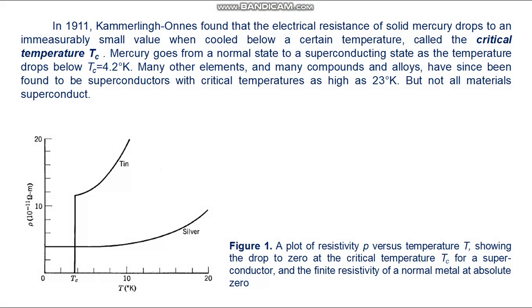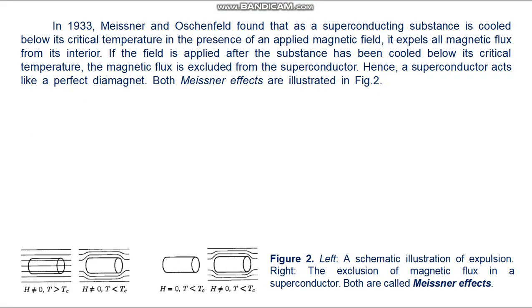Figure 1 shows the resistivity at very low temperatures for a superconductor (tin) and a non-superconductor (silver). In a superconductor, currents can be set up which persist for years with no detectable decay.